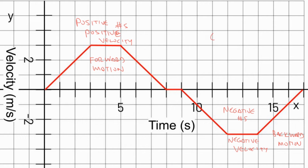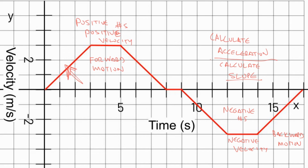To calculate the acceleration, you calculate the slope. Looking at this graph: here we have constant acceleration, here we have constant velocity, here we have changing acceleration, here we have constant velocity, and then here is another acceleration — a changing velocity.